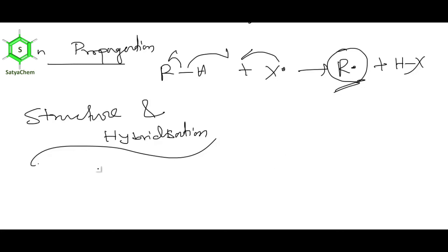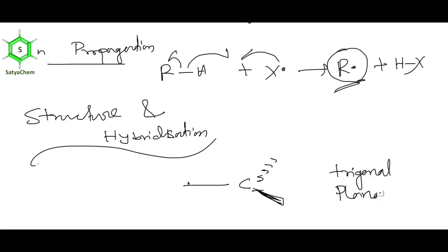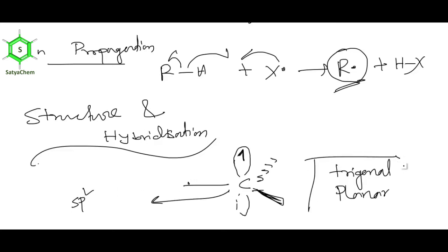Structure and hybridization of carbon free radicals: hybridization is sp2, geometry is trigonal planar, and the single unpaired electron resides in the unhybridized p orbital perpendicular to the plane.